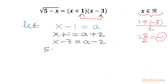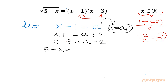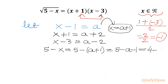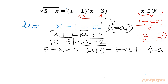And similarly we rewrite 5 minus x. From the substitution equation, x equals a plus 1, so 5 minus x becomes 5 minus (a plus 1), which is 4 minus a. So in place of x plus 1 we write a plus 2, in place of x minus 3 we write a minus 2, and in place of square root (5 minus x) we write square root (4 minus a).